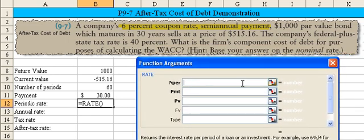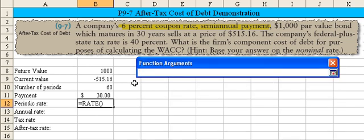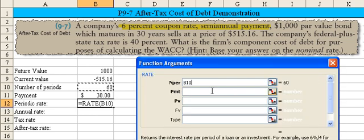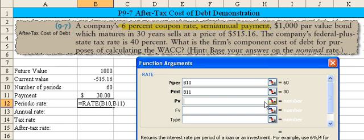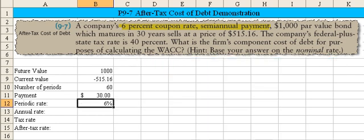The number of periods comes from right there, cell B10. The payment amount is $30.00, B11. Present value of the bonds is cell B9. The future value is the face value when it gets paid off. And if we hit enter, we calculate a periodic rate of 6%.